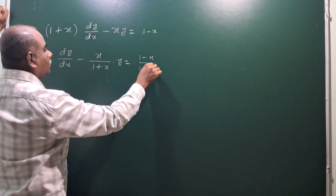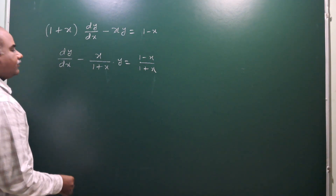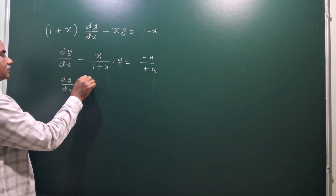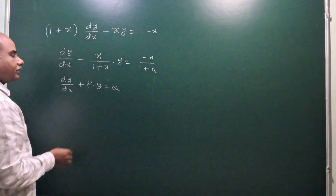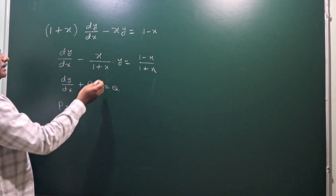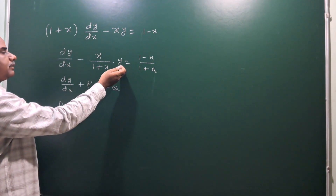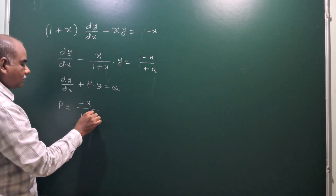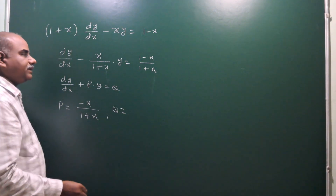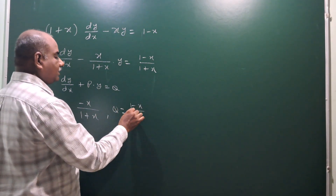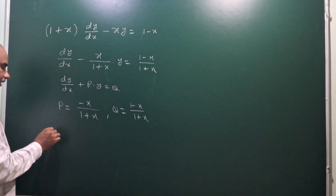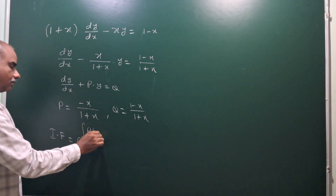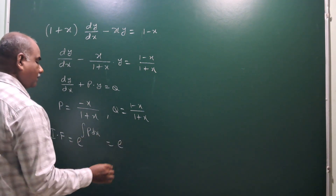This is now in standard form. Comparing with the standard form dy by dx plus P into y is equal to Q, we get P is equal to the coefficient of y, which is minus x by (1 plus x), and Q, which is on the right side, is 1 minus x by (1 plus x).